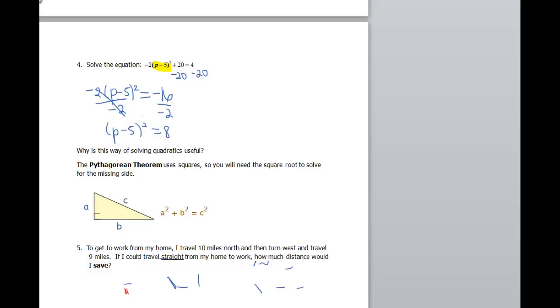Now that I have my square by itself, I can do the square root of both sides. Stick in my plus or minus. So I end up with p minus 5 equals plus or minus the square root of 8. Go ahead and add 5 to both sides. So I'm going to give an answer of p equals 5 plus or minus the square root of 8.